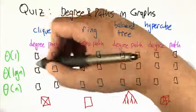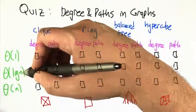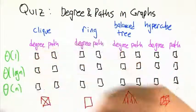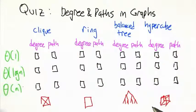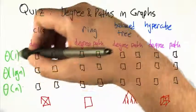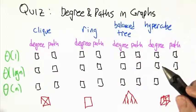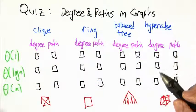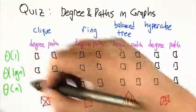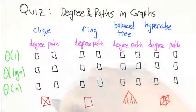Is it constant? It doesn't depend on the number of nodes in the graph. Is it logarithmic or is it linear? So a graph that has low degree might be 1 or log n and that has short paths might be O(1) or log n. So which properties do these graphs exhibit?